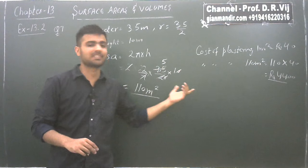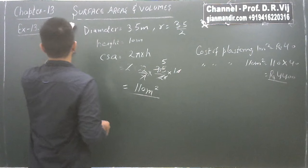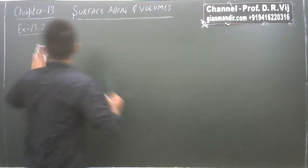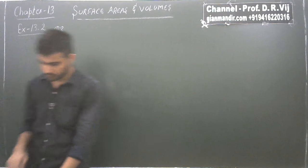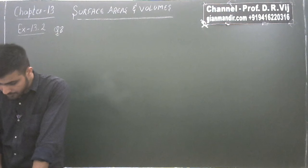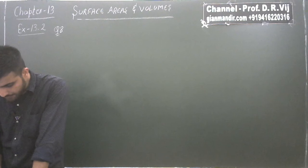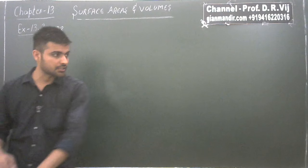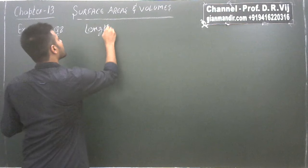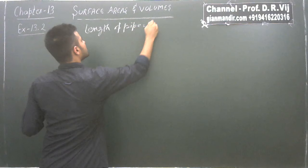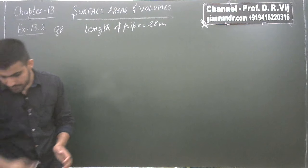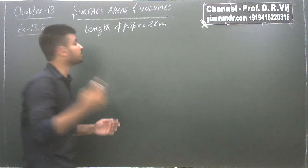This was question number 7. Let's move on to question number 8 of exercise 13.2. Question number 8 says that in a hot water heating system, there is a cylindrical pipe of length 28 meter and diameter 5 centimeter. Find the total radiating surface in the system. So we have to find the curved surface area.